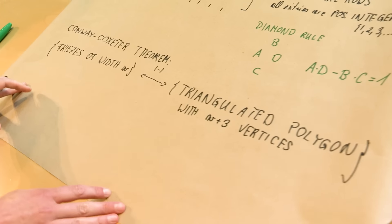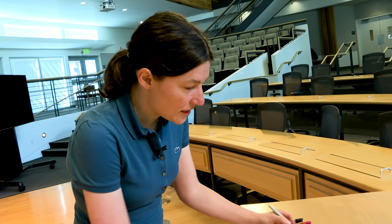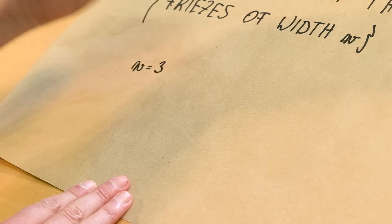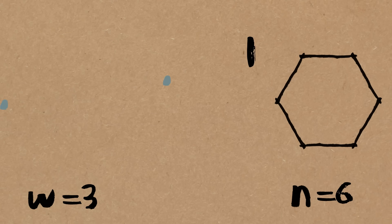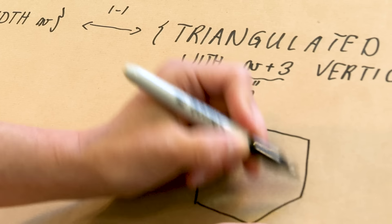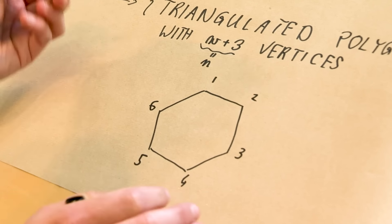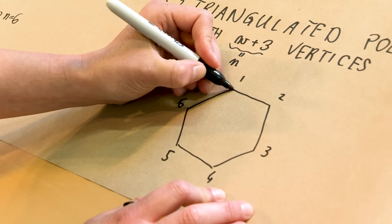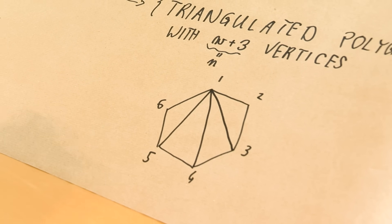Let me give you an example. It's easier to start with the polygon. I'll choose W equals three, so I'm looking at a hexagon — that's W plus three, which I call N. I start drawing a hexagon and number the vertices one, two, three, four, five, six. Then I choose a triangulation. You can find 14 different triangulations of a hexagon. I'll choose a very regular one — this is what's called the fan triangulation.